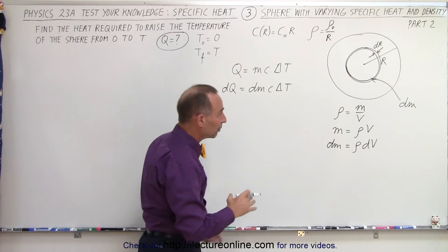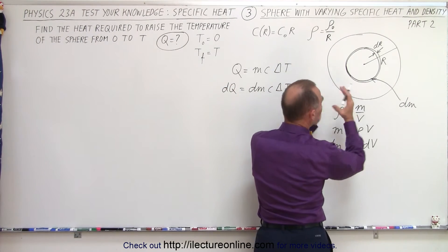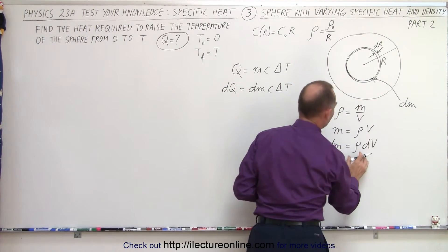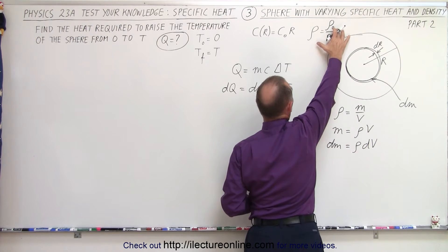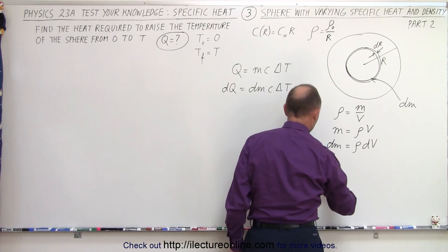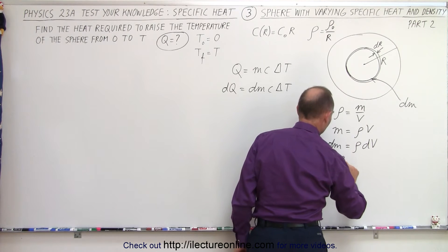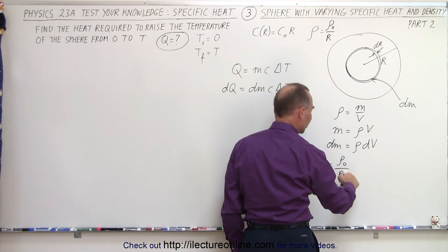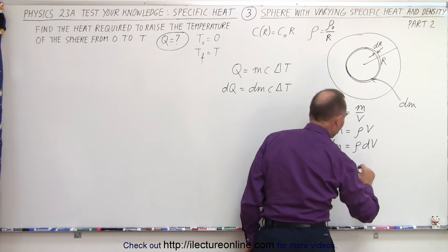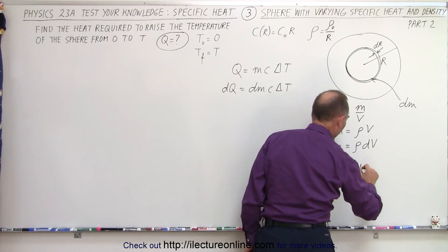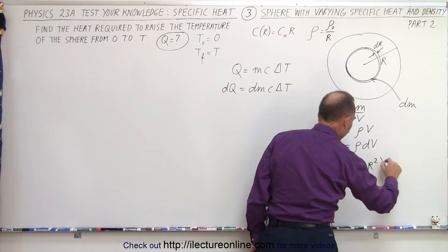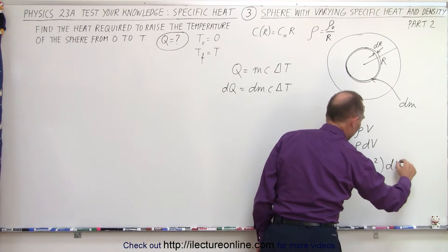And the volume of a shell can be written as the surface area times the thickness dr, and the density can be written as the density divided by R. So dm is equal to density divided by R. So this here is a constant density divided by the radius, and dV is going to be 4 pi r squared times dr.